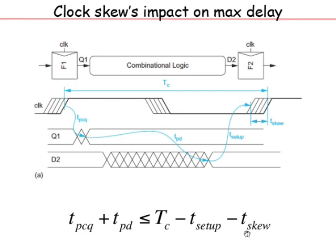If skew is in the other direction it gives you more time for the max delay path, but you get hurt on the min delay side. As a designer you must margin for worst-case conditions. For min delay with skew, if the receiving flop's clock is delayed, D2 must be held longer: TCCQ + TCD ≥ T_hold + T_skew. T_skew worsens both setup and hold time problems. In a design with feedback loops, delaying the clock somewhere will hurt you elsewhere, so average skew should be kept at zero.